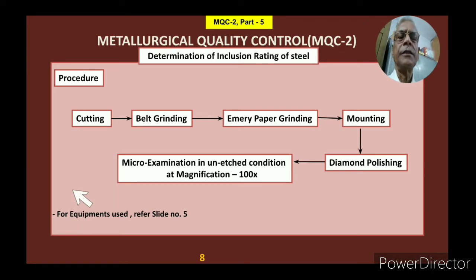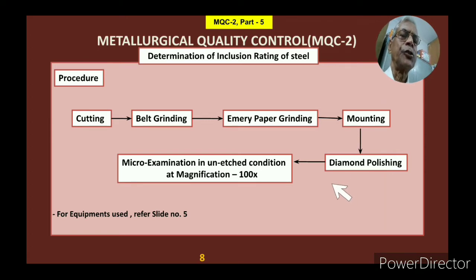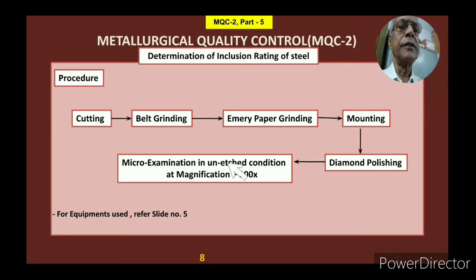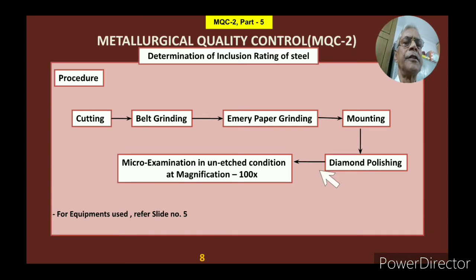The sample preparation procedure involves: cutting, belt grinding, emery paper grinding, then mounting, then diamond paste polishing — using diamond paste instead of alumina paste — and then micro-examination at a magnification of 100x in an unetched condition. For details on sample preparation, refer to slide number 5 where these steps have already been explained.